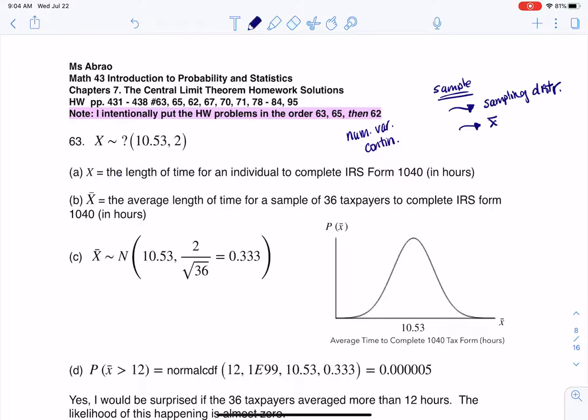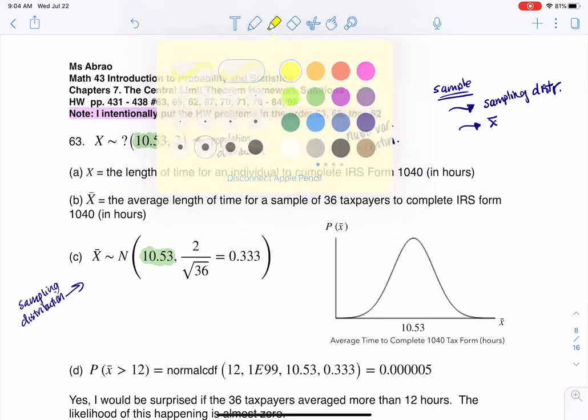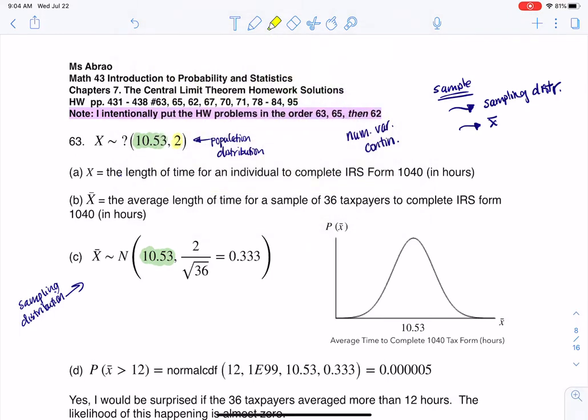Part C says, can you get the distribution for x-bar? We've learned from sampling distributions that the mean of your population will be the mean of your sampling distribution. When you hear me say distribution, I just mean I'm making a graph. Whatever the mean of your population distribution, that's going to be the mean of your sampling distribution.